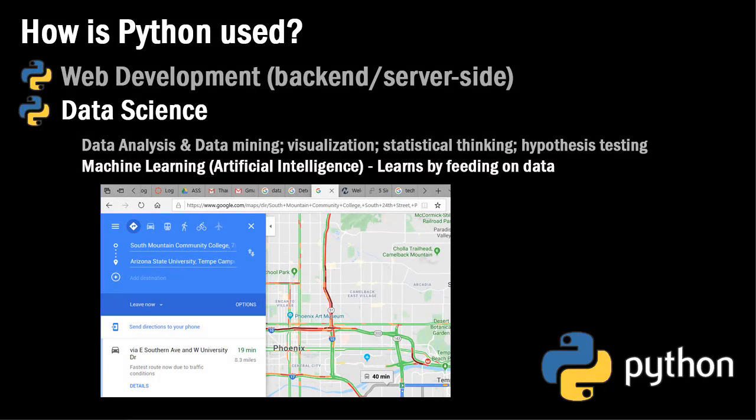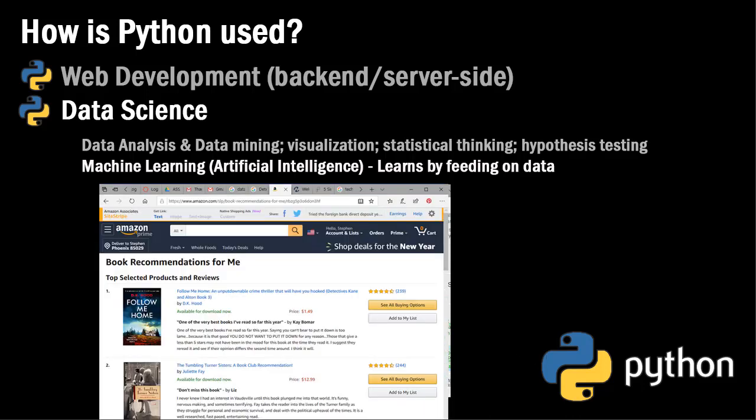Another area in data science is machine learning, what we might refer to as artificial intelligence or AI. Here the computer, using some algorithms, learns by looking at data — it feeds itself on data and comes to conclusions that might change how it reacts to data down the road. An example would be Google Maps, where it shows how many minutes it might take to get from one place to a destination, and it can look at traffic data to come up with an estimate. We've often used commercial websites where they make recommendations on products based on things we've looked at or purchased in the past. In the case of Amazon, there's a new book coming out that they think, based on the books you bought previously, you'd be really interested in — so it's targeted marketing, and they can use Python to accomplish that.